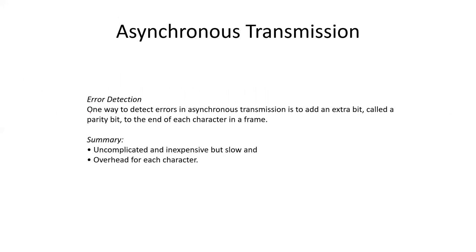One problem in asynchronous transmission is error detection. One way to detect errors is to add an extra bit called a parity bit, which is added to the end of each character in a frame to verify the message. The final conclusion: asynchronous transmission is uncomplicated and inexpensive but slow, and for each character we need a start bit, stop bit, and parity bit, so overhead is high.